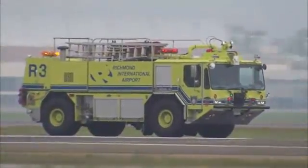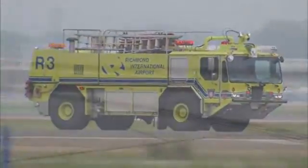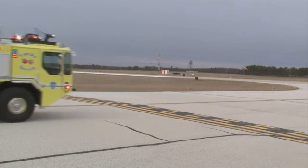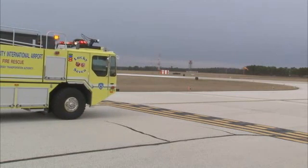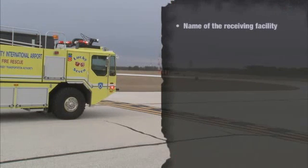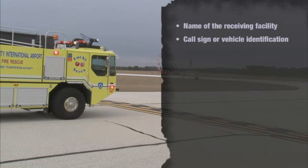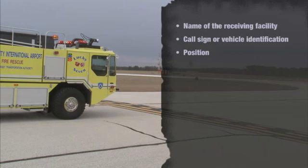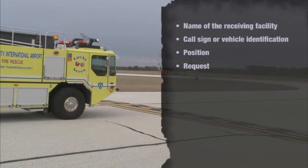You do not need clearance to enter non-movement areas. When requesting clearance or stating your intentions, always provide the following information: the name of the facility you're calling, such as 'Washington Ground'; your call sign or vehicle identification, such as 'ARF 2'; your position, such as 'on Taxiway Charlie, holding short of runway 31'; and your request, such as 'request permission to cross runway 31.'